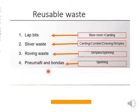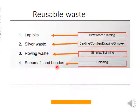Bonda waste, also known as clearer waste, comes from the clearer or fleece rollers located on top of the rubber top rollers in the drafting zone. The function of the clearers is to remove soft fiber and prevent roller lapping. These are usable, reusable wastes.